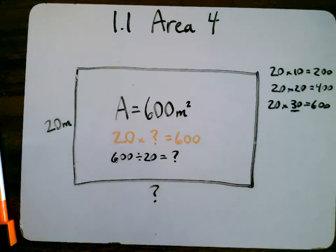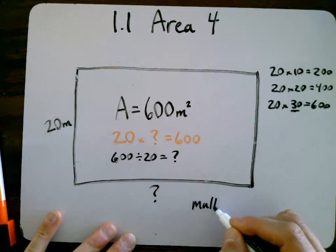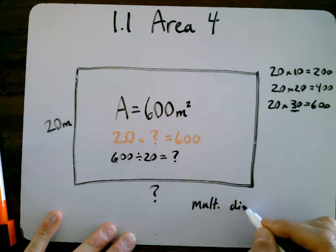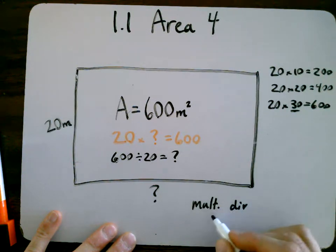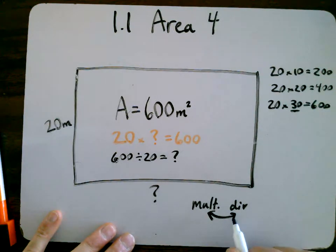Remembering that multiplication and division are opposites, so one of them undoes the other.